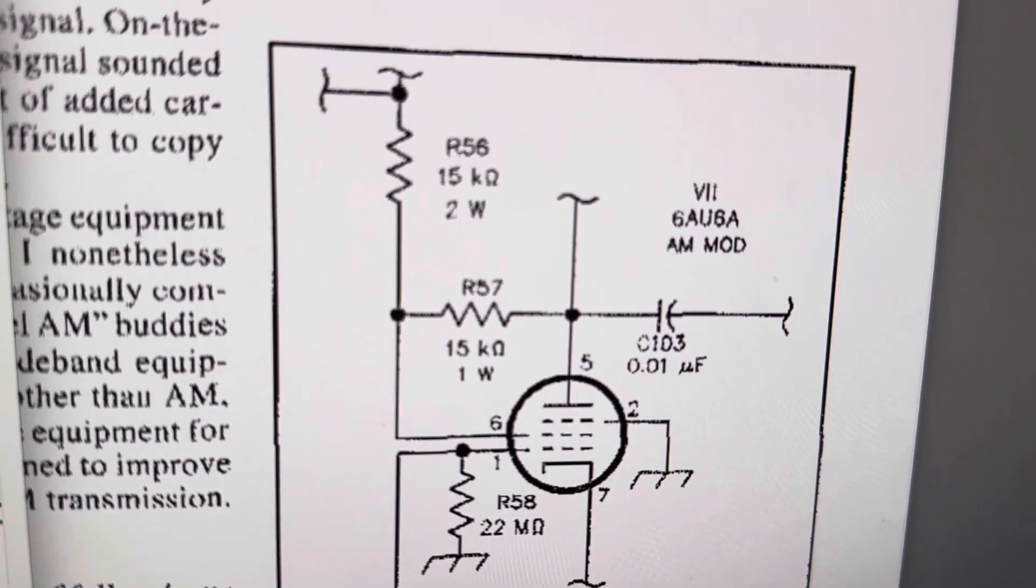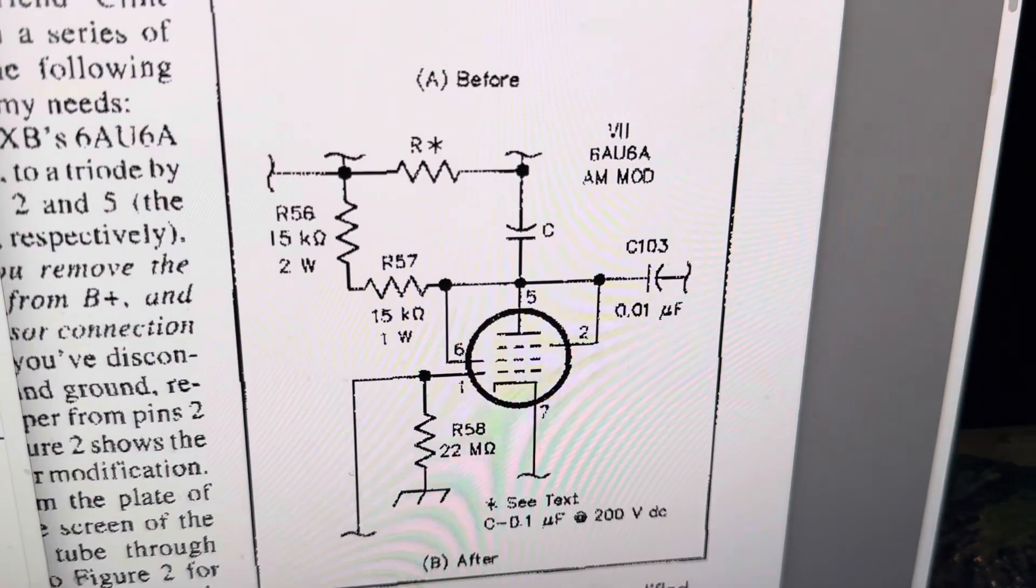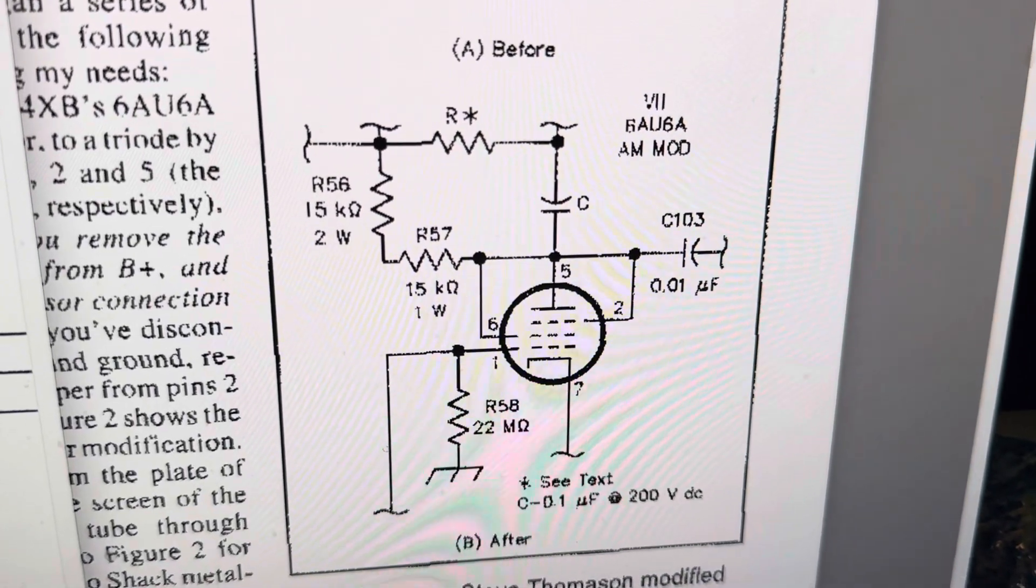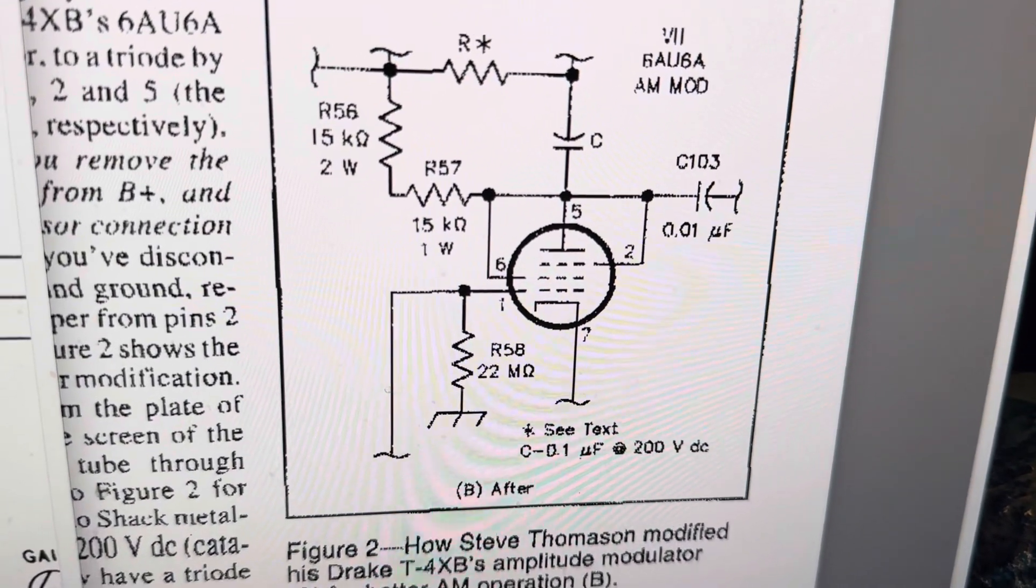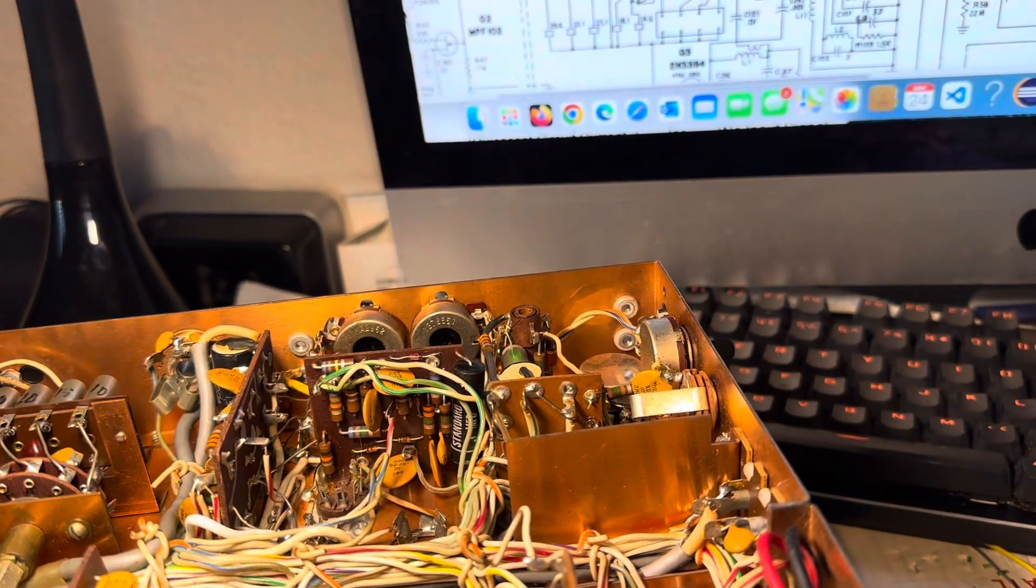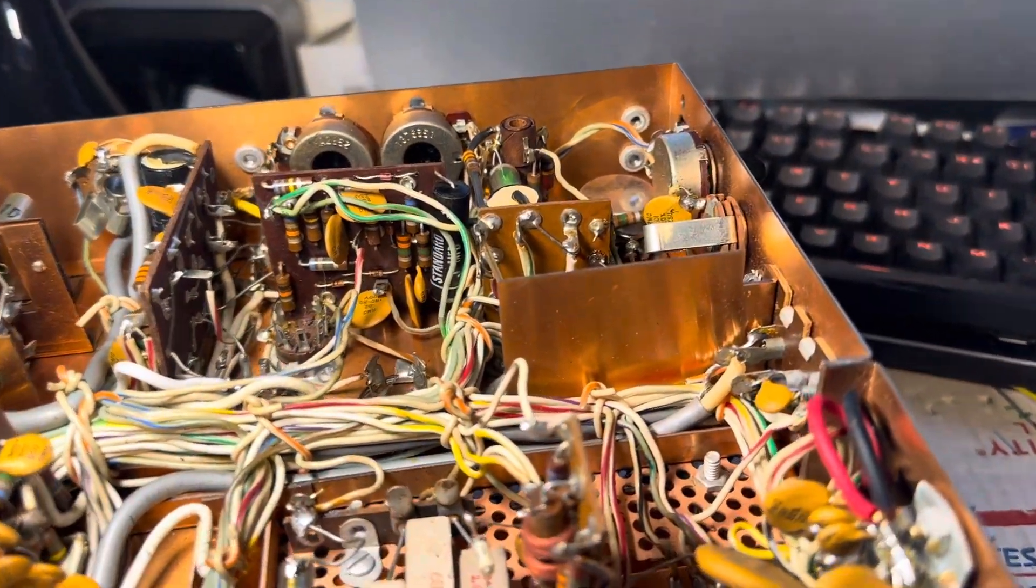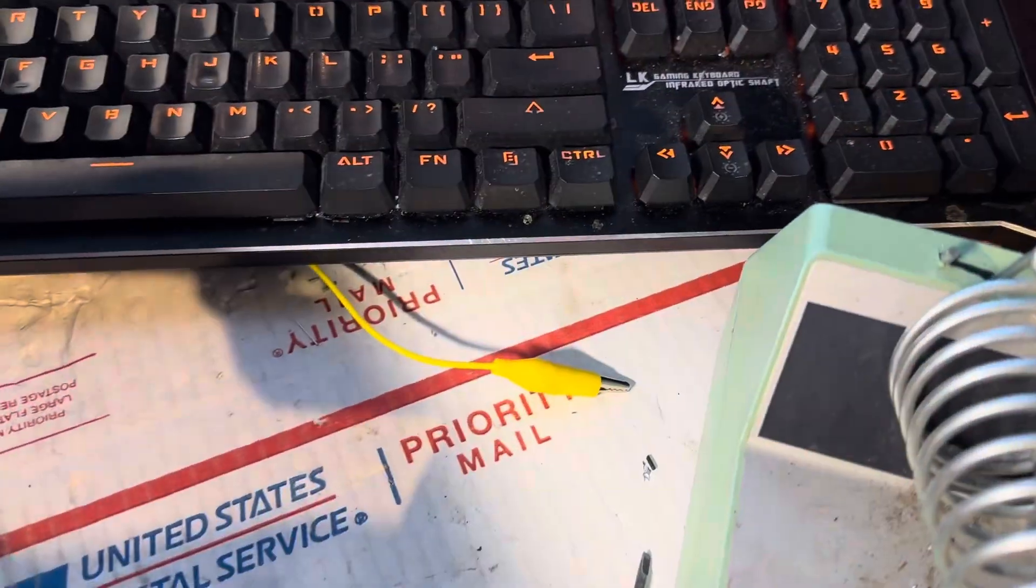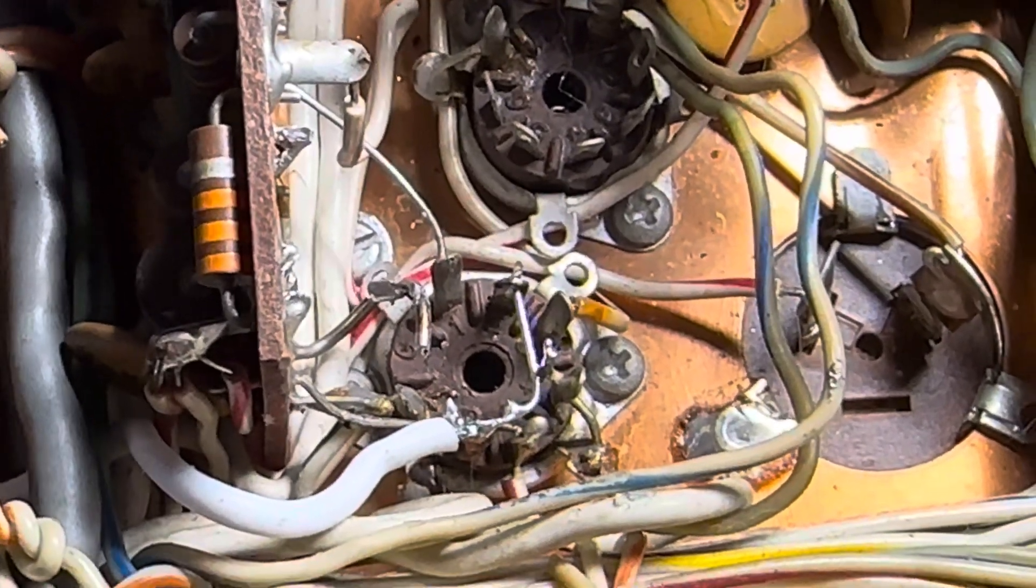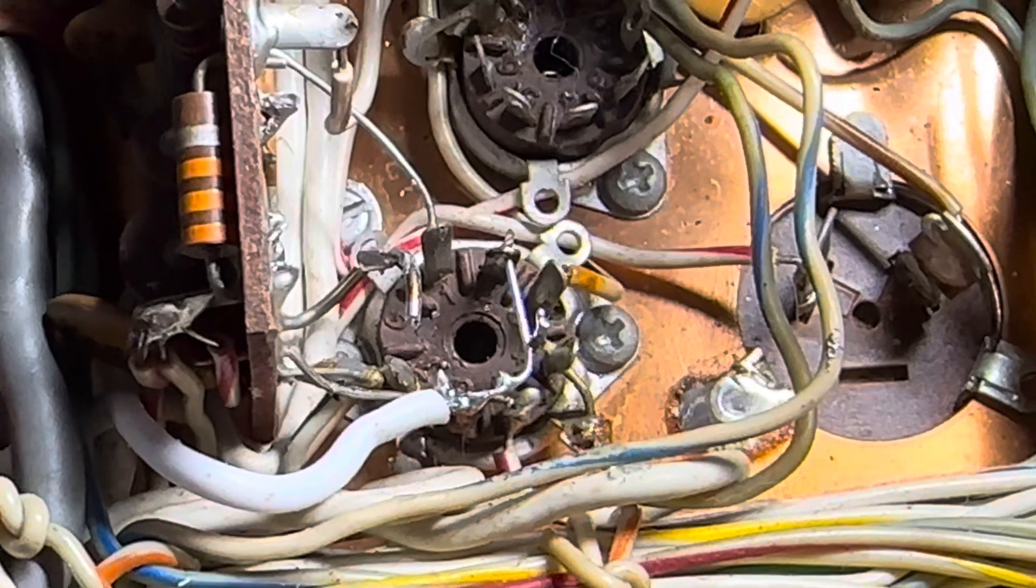I'll show you where this stuff is. The 6AU6 is right here - no, that's the 12BY7. Here's the 6AU6 right here. I've put together pins, what does he call for here? I'm going to read the instructions again as my memory is not photographic. Pins 6, 2, and 5 need to be tied together.